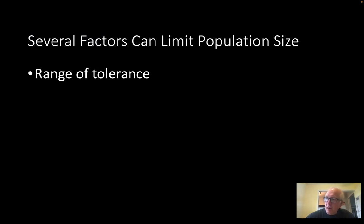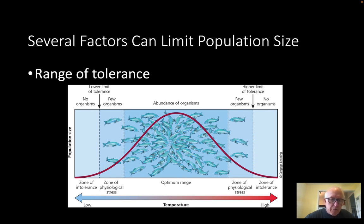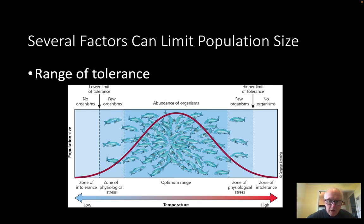Range of tolerance can limit population size — for a fish species, if temperatures are too high or too low, they can't survive; at the optimum range, you get maximum growth. This is a good reminder of the value of genetic diversity: if temperatures drastically drop, a good percentage of the population might not handle it, but the species continues because some individuals can and pass on those traits — the same applies at the higher end.